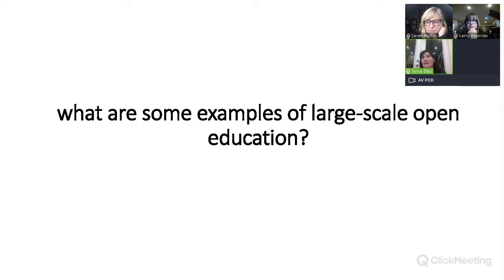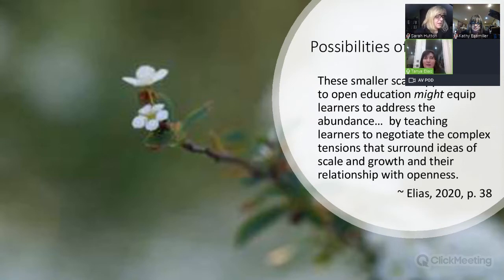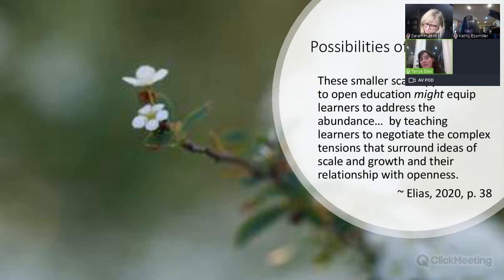Big is also contextual — big if we're talking about a social media network is different than big if we're talking about a classroom or a cohort. On the flip side are the possibilities of small. I've really been thinking about what a smaller-scale approach to open education looks like. Merton talked about a pedagogy of abundance, and for me, thinking about small and appreciating small might be an answer to how we teach people to deal with abundance.